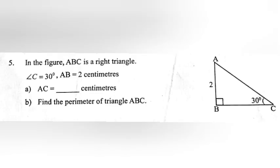Question 5: In the figure, ABC is a right triangle. Angle C equals 30 degrees, AB equals 2 cm. Part A: AC equals how many cm? Answer: 4 cm.